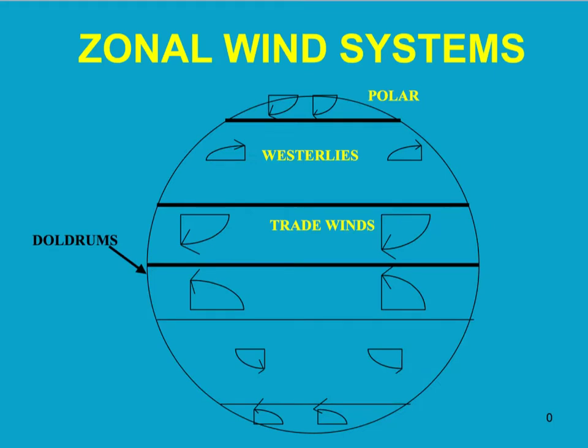The Coriolis effect also affects our wind systems, and it's actually the wind systems pushing the surface of the water that causes the movement of surface currents. That's why we have to look at both.